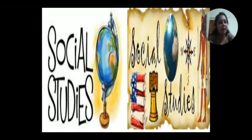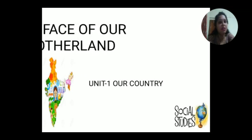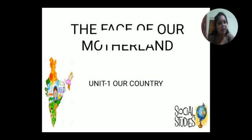Students, today we will do a recapitulation of Unit 1 - Our Country. We will take Chapter 1 of our social science book. What is Chapter 1 of our social science subject? Tell me, do you know the face of our motherland? Today we will do the recapitulation of 'The Face of Our Motherland' and we will do the back exercise and the book exercise of this chapter. First, we will do a quick recapitulation of the chapter and then we will do the book exercise so that you can write in your notebook and start learning the chapter's back exercise. Now let's start with the recapitulation of the face of our motherland, India.